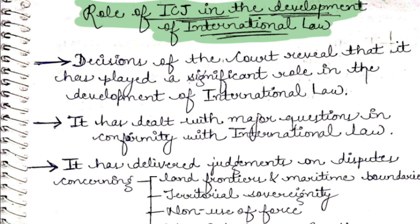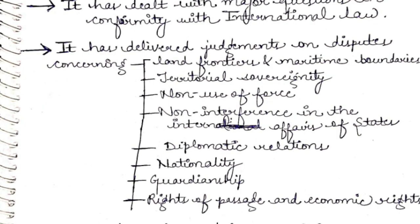The role of the ICJ in the development of international law: the decisions of the court reveal that it has played a significant role in the development of international law. It has dealt with major questions in conformity with international law, and has delivered judgments and advisory opinions in various disputes.